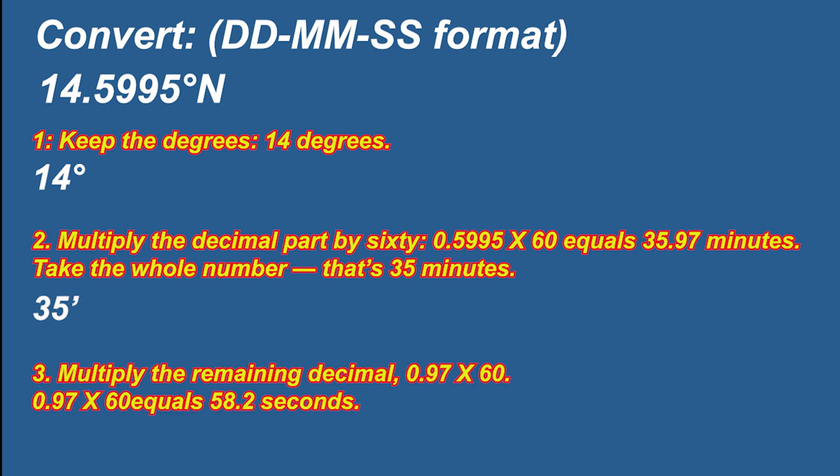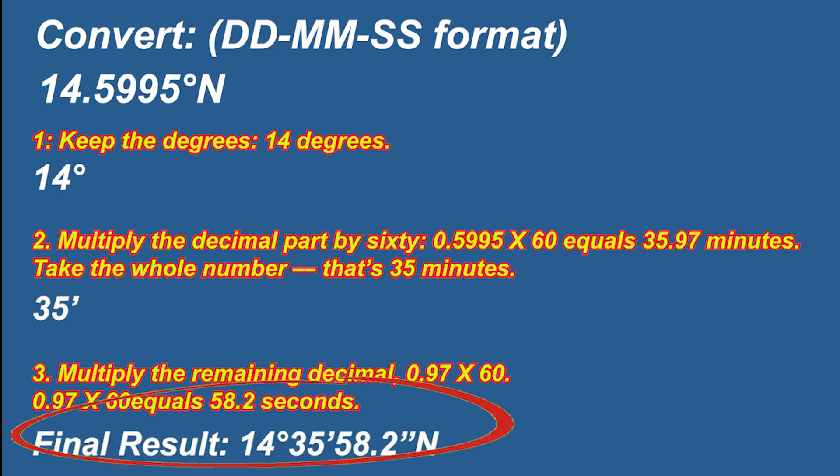Step three: Multiply the remaining decimal 0.97 by 60. 0.97 times 60 equals 58.2 seconds. The final result is 14 degrees, 35 minutes, 58.2 seconds north.